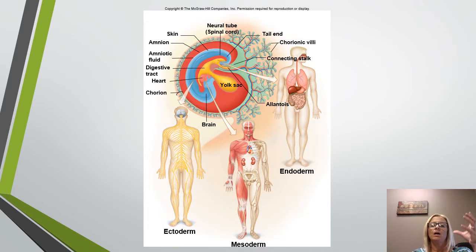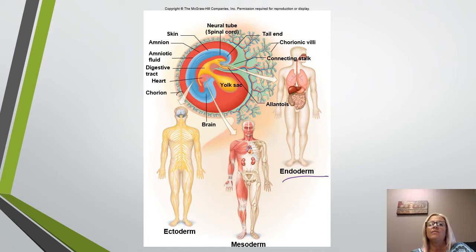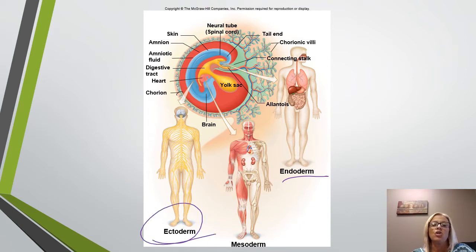The primary germ layers are pulled out and you can see the major body parts derived from the endoderm: the epithelial lining of the digestive tract, the lining of the respiratory tract, and the urinary bladder. Then the major body parts from the ectoderm are the nervous system and the skin.